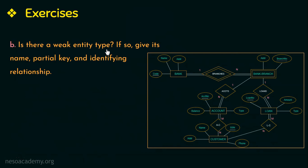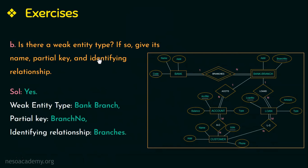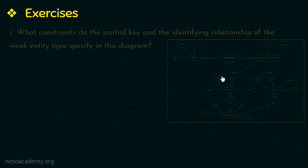The answer to 'is there a weak entity type?' is yes. The name of the weak entity type is bank branch. The partial key is represented by a dotted underline under the attribute name — here the partial key is branch number. The identifying relationship is 'branches'.